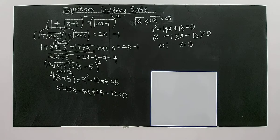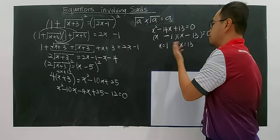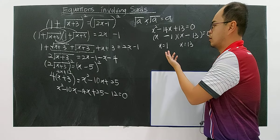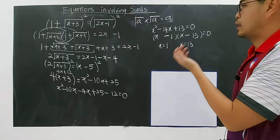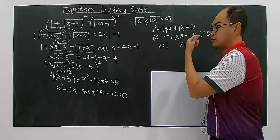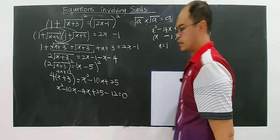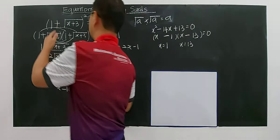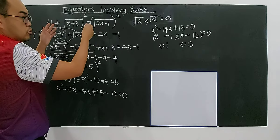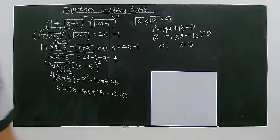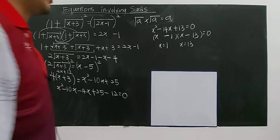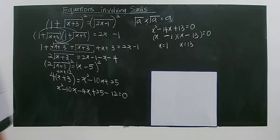With two solutions, maybe both are accepted, or maybe only one is. You need to check because squaring the equation is a modification — once you square, you may get more than one possibility, so you must verify each solution.